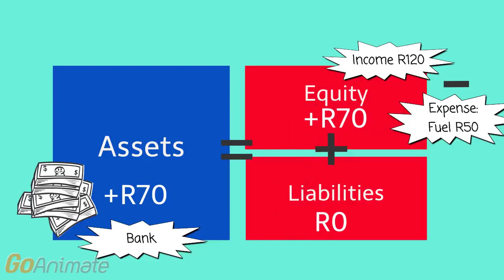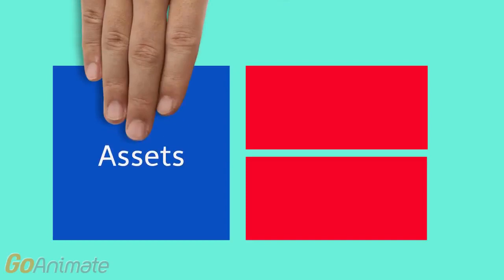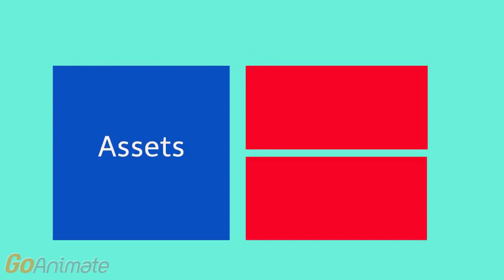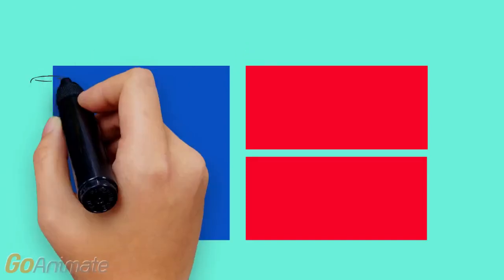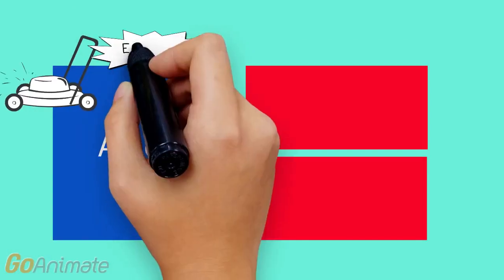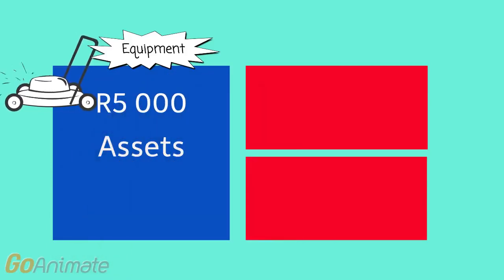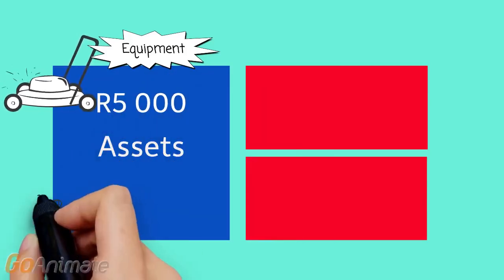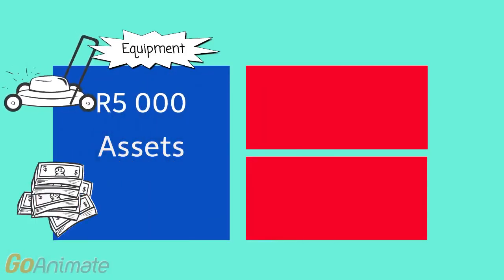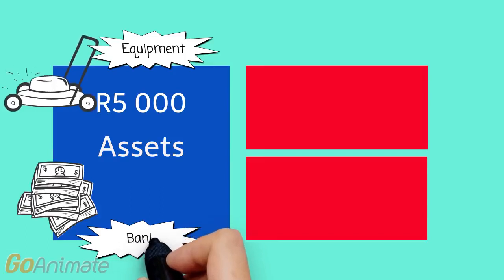So the blue and red boxes are equal. If we put all of the transactions together, we now have the following: Nandi's first asset is equipment of 5,000 rand, and her second asset is the money in the bank.